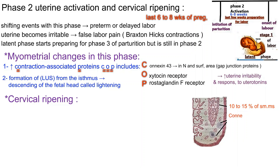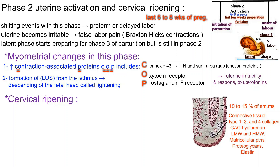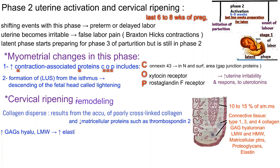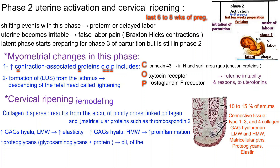The connective tissue of the cervix includes type 1, 3, and 4 collagen, glycosaminoglycans, hyaluronan (low and high molecular weight), matricellular proteins, proteoglycans, and elastin. Before contractions begin, the cervix undergoes extensive remodeling: collagen dispersal results from accumulation of poorly cross-linked collagen and reduced expression of matricellular proteins such as thrombospondin-2. Low molecular weight hyaluronan increases elasticity; high molecular weight hyaluronan increases pro-inflammation. Proteoglycans allow dilatation of the cervix without tearing.